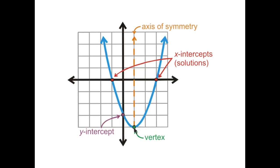The vertex is described as the point where the parabola changes direction or changes growth. For example, in this case, this parabola is going down, but as soon as it touches the vertex, it starts going up.